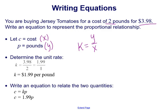3.98 divided by 2, which gives us 1.99 divided by 1, which is $1.99 per pound. So $1.99 per pound equals k. That's the constant of proportionality.